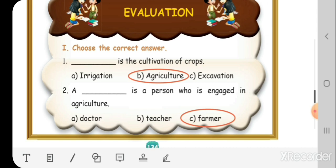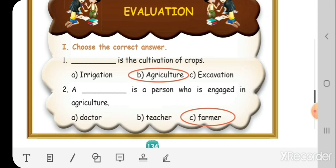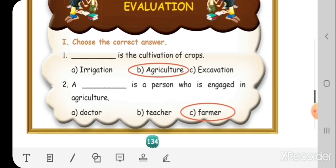First one. Dash is the cultivation of crops. Agriculture is the cultivation of crops.